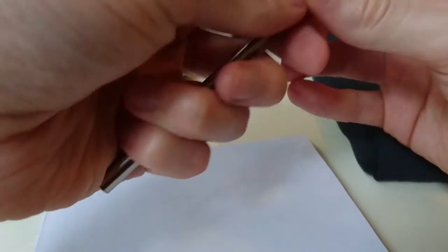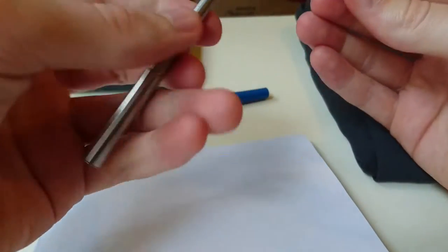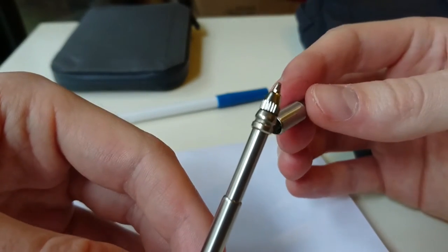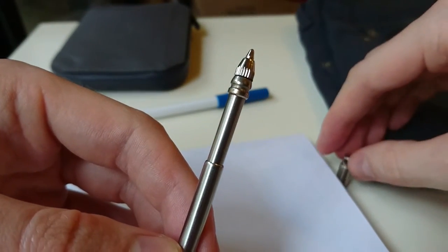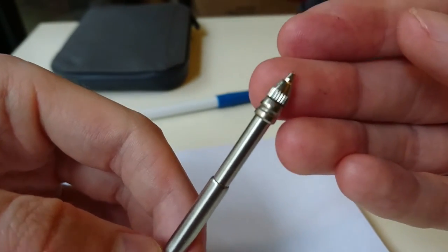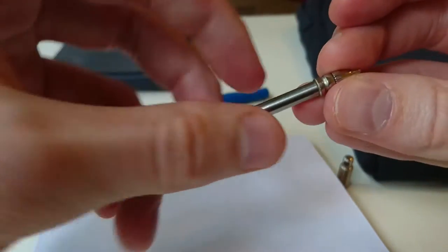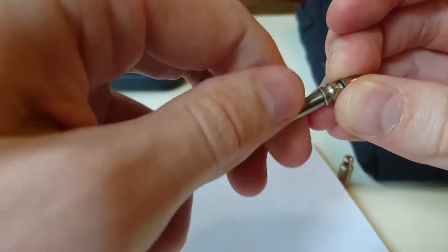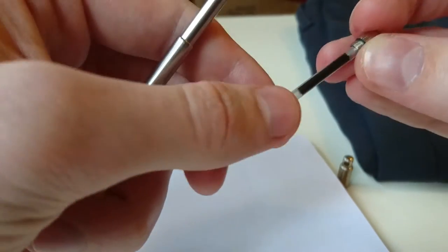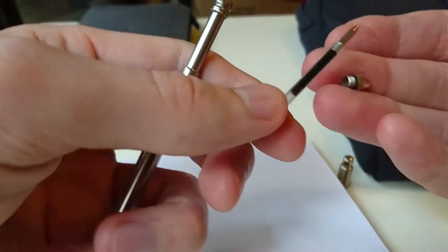Now the lid has a click ability, so it just clicks on. And this is the pen tip. And to change the ink you just simply unscrew the top part, and you have the nib and the ink.